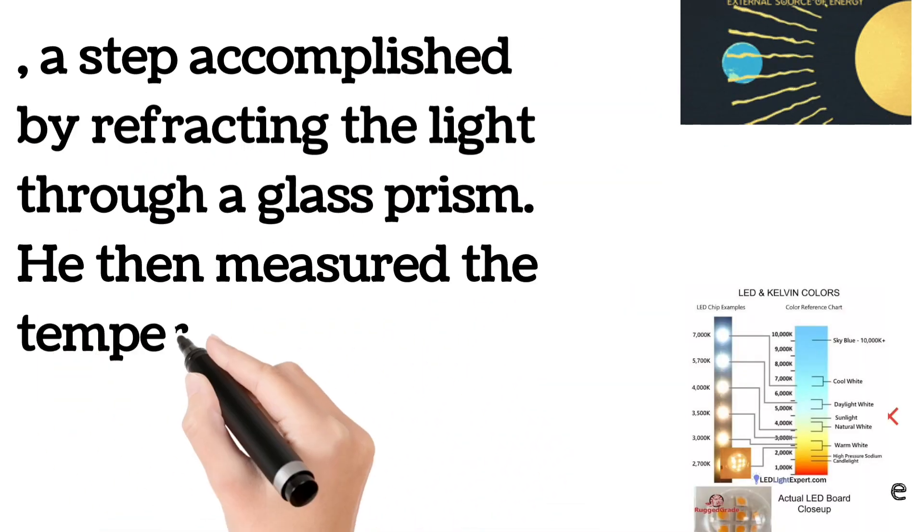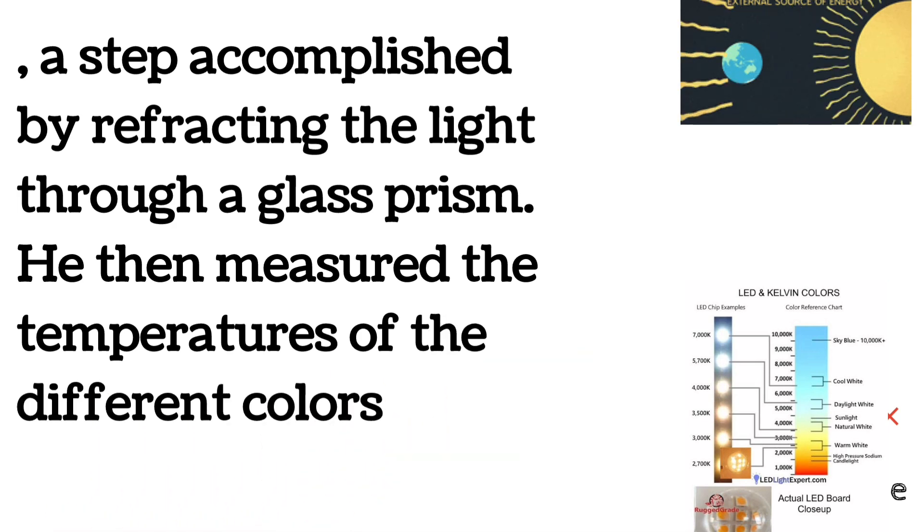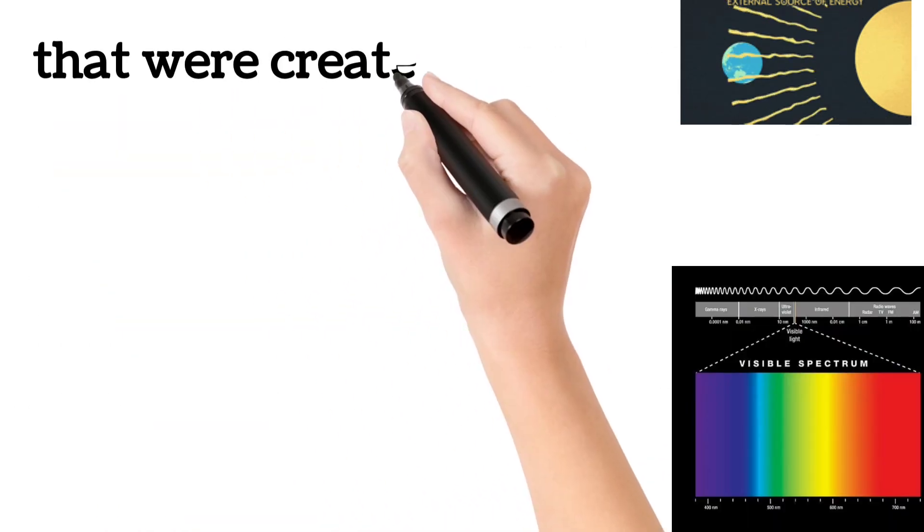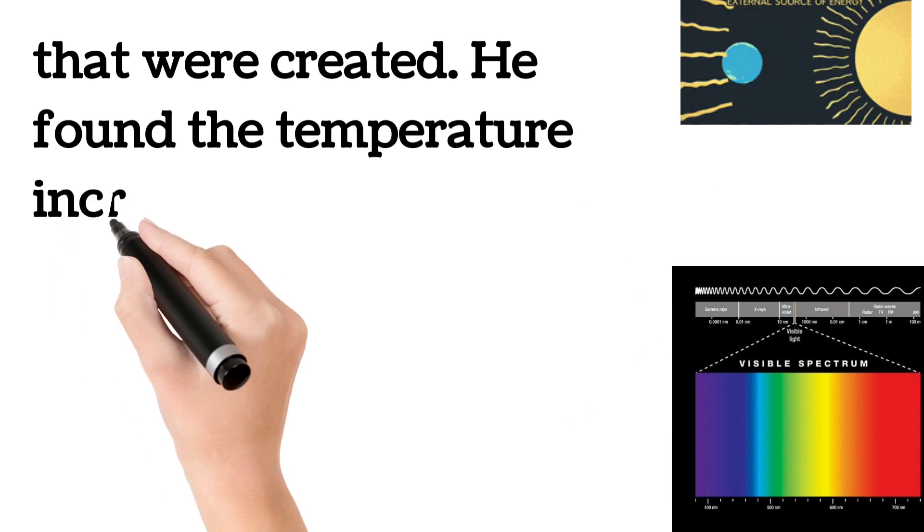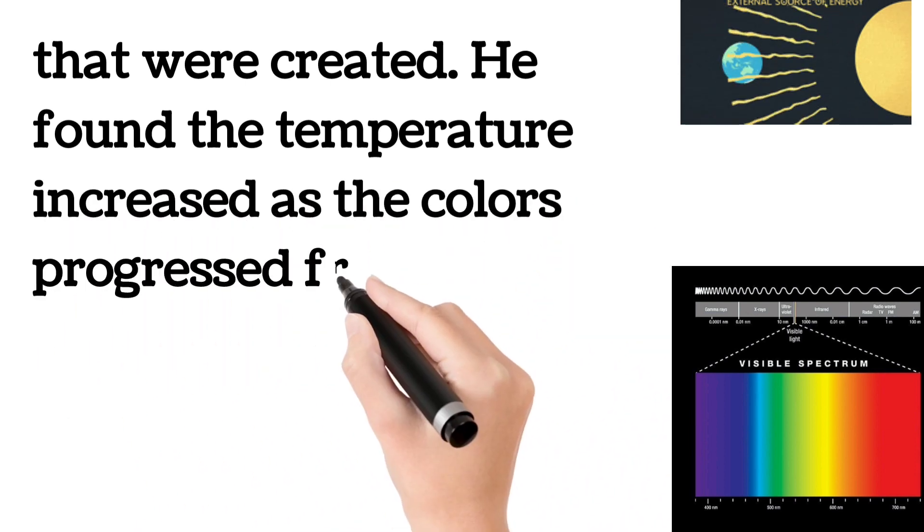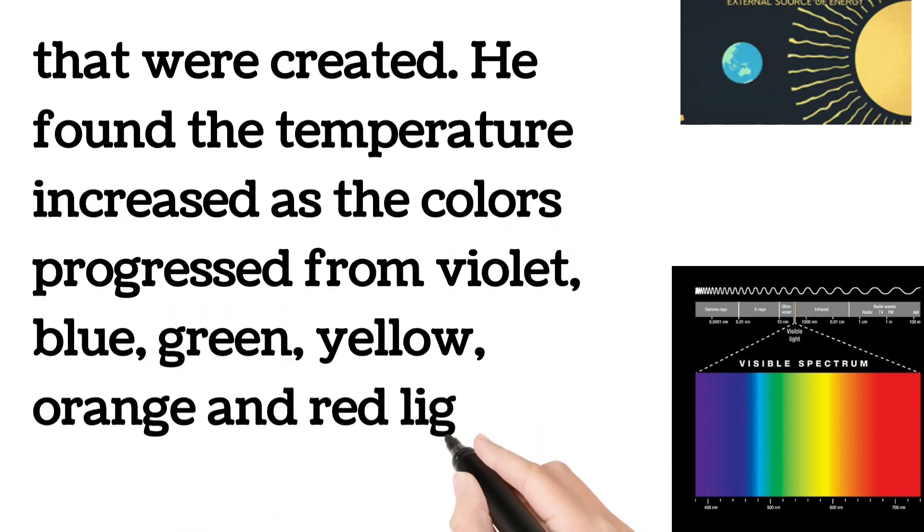He then measured the temperatures of the different colors that were created. He found the temperature increased as the colors progressed from violet, blue, green, yellow, orange and red light.